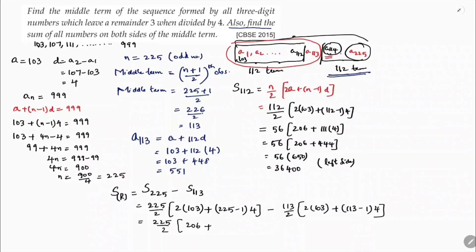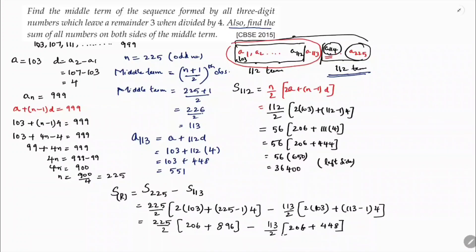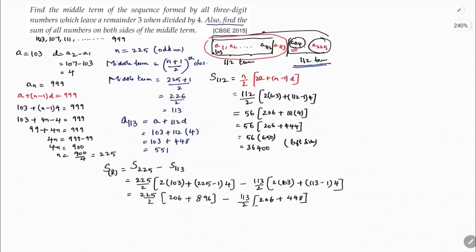225/2 × [206 + 896] = 225/2 × 1102. Dividing 1102 by 2 gives 551, so S₂₂₅ = 551 × 225 = 123,975.